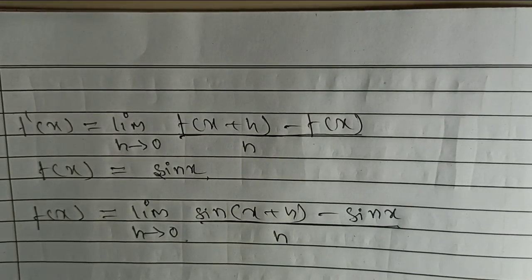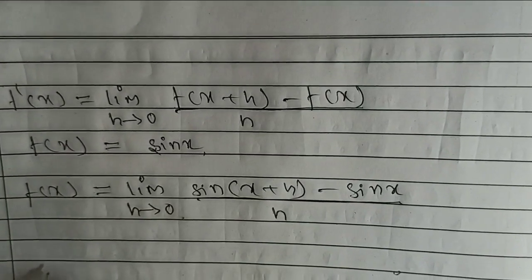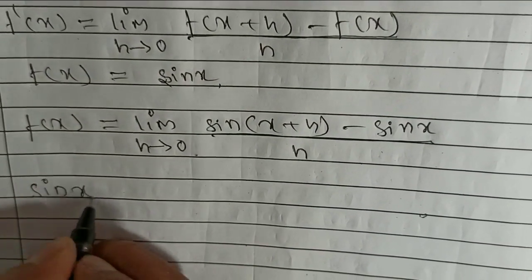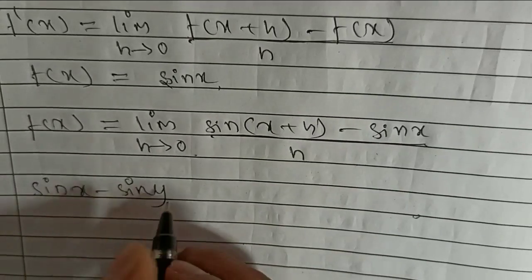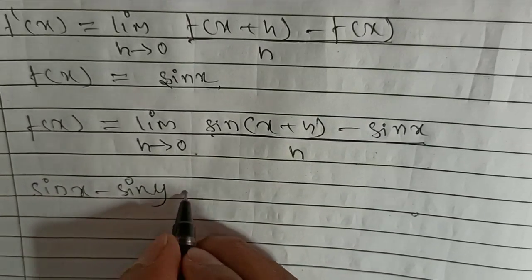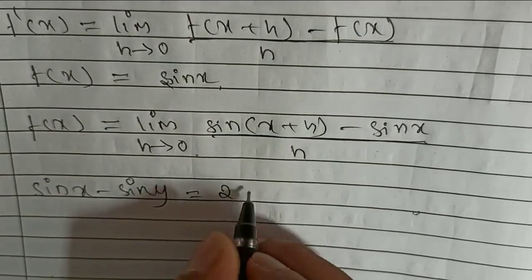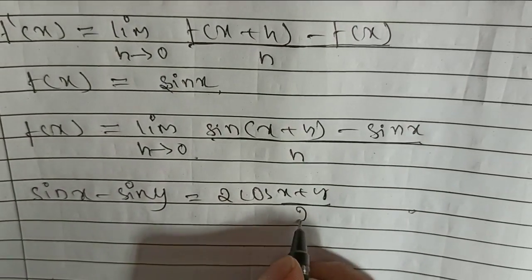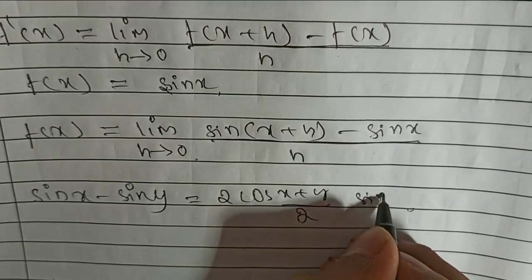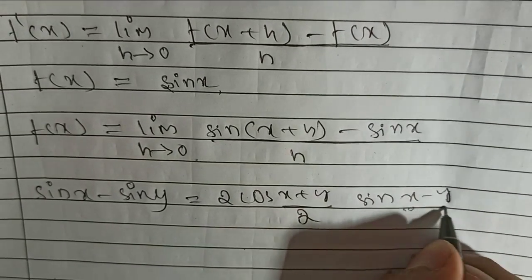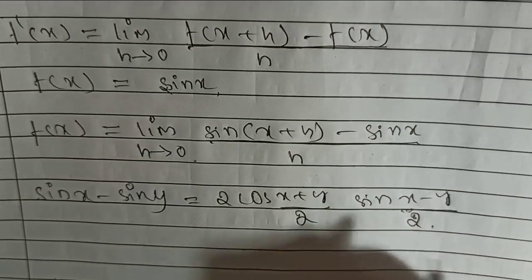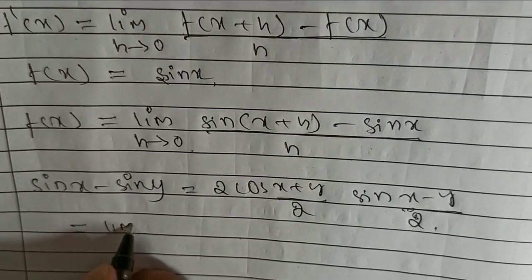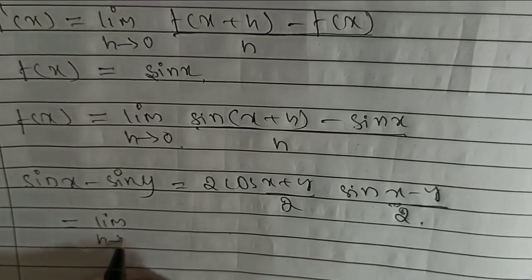From compound angle formula, we have one formula that is sin x minus sin y is equal to 2 cos of x plus y by 2 into sin of x minus y by 2, which is equal to limit h tending to 0.